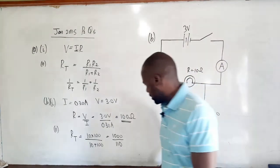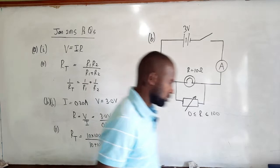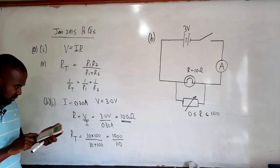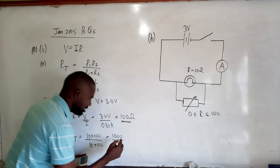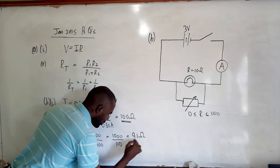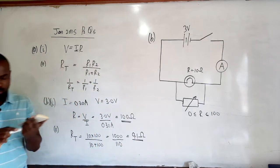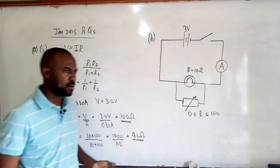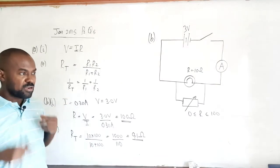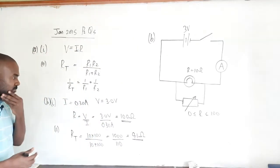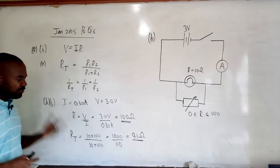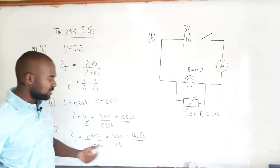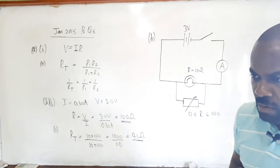1000 divided by 110 gives approximately 9.1 ohms. As expected, the effective resistance of these two resistors connected in parallel is smaller than even the smallest of the two individual resistances. This is typical of resistors connected in parallel — the effect is to reduce the overall resistance. The effective resistance of two resistors in parallel is always smaller than the smaller of the two resistors.